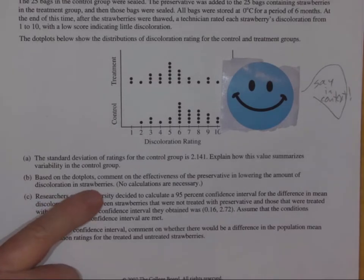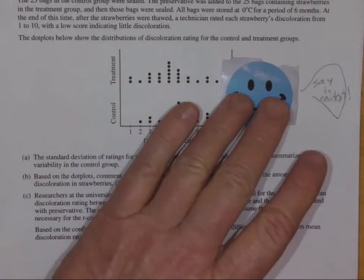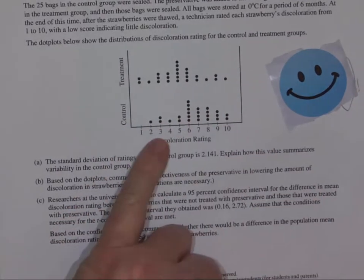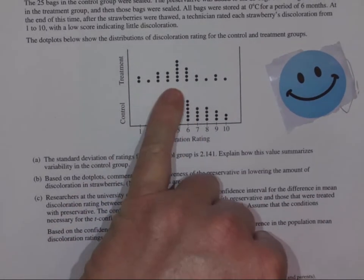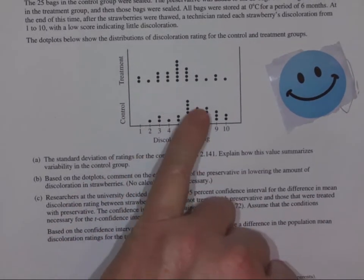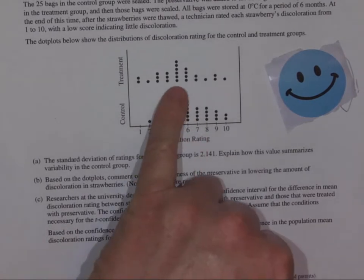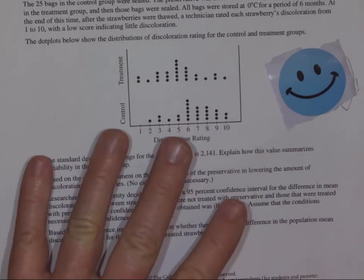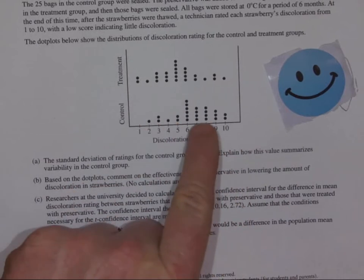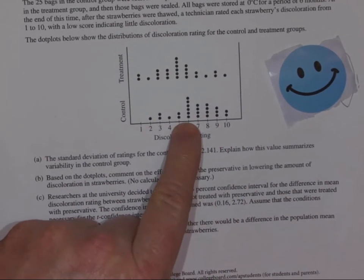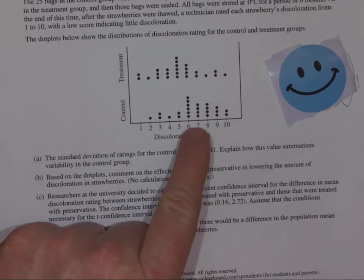And then it said, comment on the effectiveness of the preservative. Well, when you look at this, you notice that in general, the center of the treatment group is lower than the center here. It said you didn't need calculations. So the center appears to be here. It's a little lower. In general, the treatment values are lower than the control group in general. It's like the curve's been shifted over a bit.